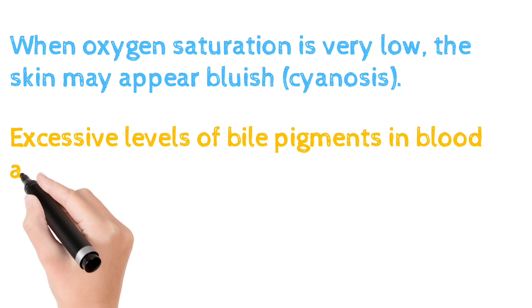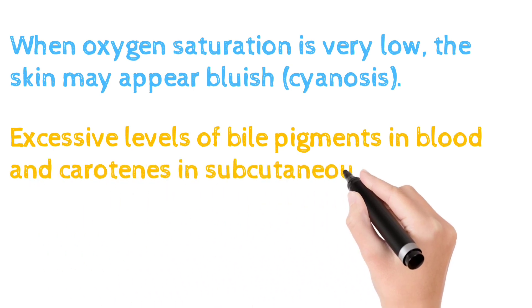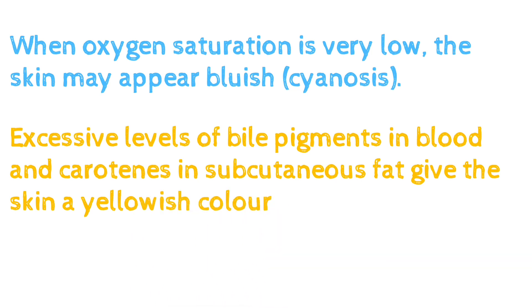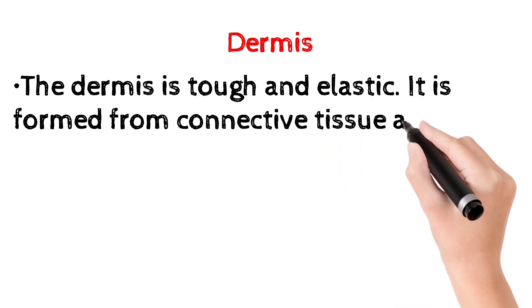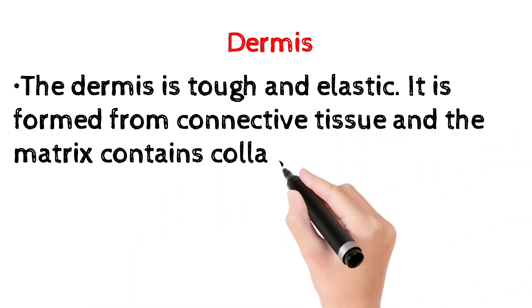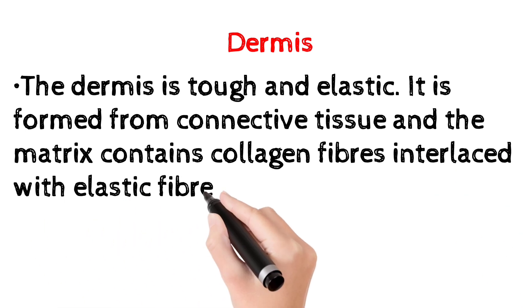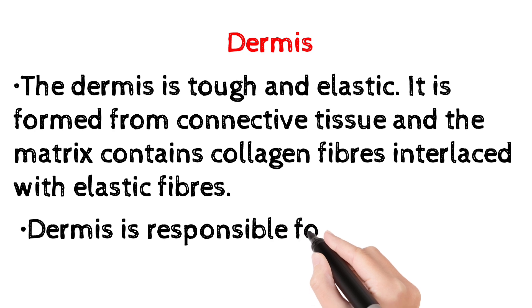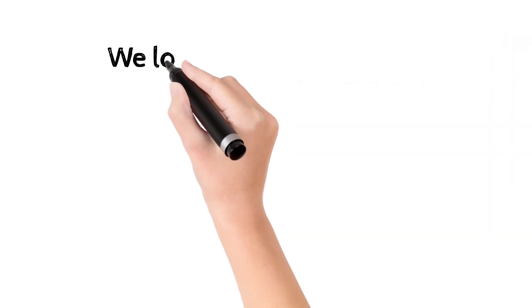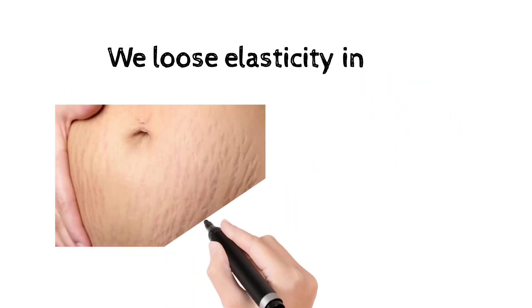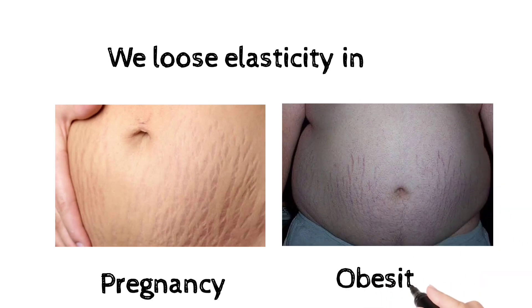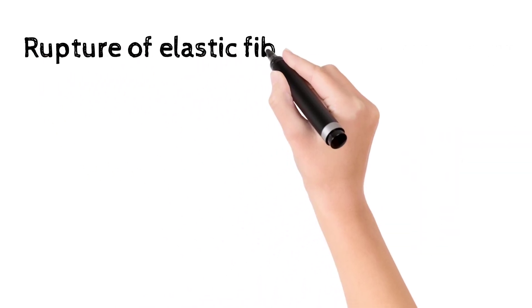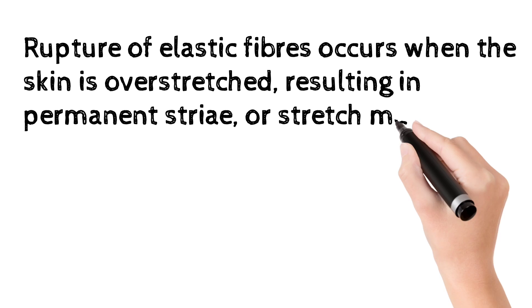The dermis is tough and elastic. It is formed from connective tissue and the matrix contains collagen fibers interlaced with elastic fibers. The dermis is responsible for the elasticity of our skin. In pregnancy and obesity, overstretching causes elastic fibers to rupture, forming stretch marks.